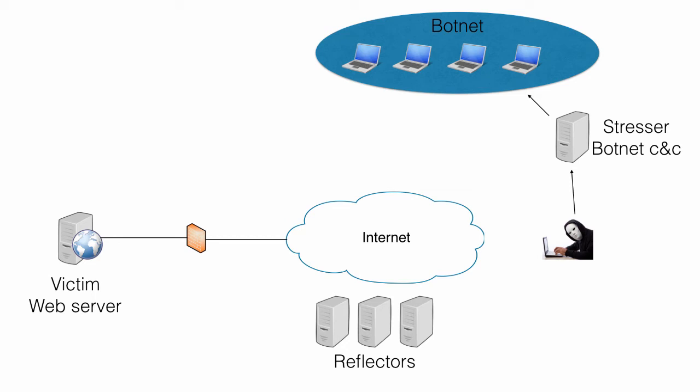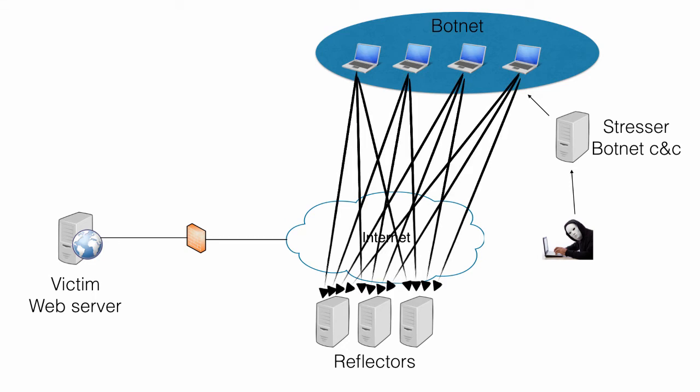In a typical DDoS attack, EvilBob is just a person wanting to take down a service on the internet. He visits a webpage delivering stressor services, enters his credit card number, and points out the address of the target he wants to take down. Depending on how much he pays, the stressor will deliver an attack at a certain bandwidth and duration — the more money, the more traffic and for a longer period. A normal price can be 30 minutes of attack at 1.5 gigabits per second for $50. The stressors send commands to the botnet, the botnet members send UDP packets to the reflectors with spoofed source addresses, and the reflectors send their amplified responses to the target.